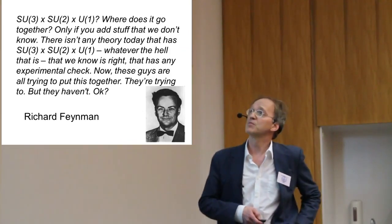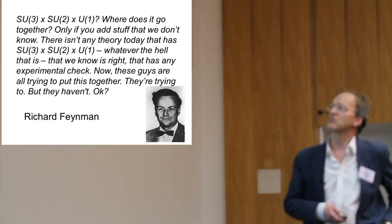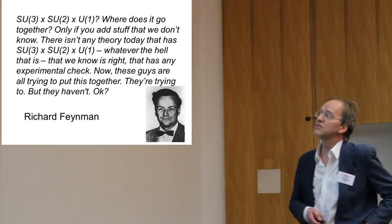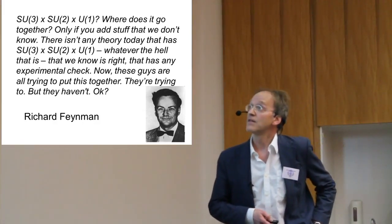Richard Feynman was a little bit outspoken. SU(3) × SU(2) × U(1). Where does it go together? Only if you add stuff that we don't know. There isn't any theory today that has any of that, whatever the hell that is, that we know it's right, that has any experimental check.